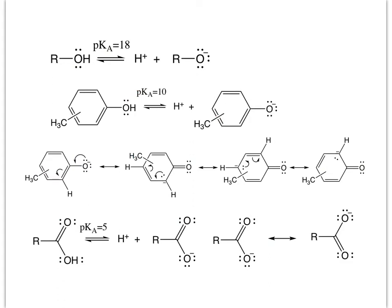The thing about phenols is that phenols have pKa's around 10, whereas an alcohol has a pKa of around 18. Phenols have a pKa around 10 because phenols can be resonance stabilized.